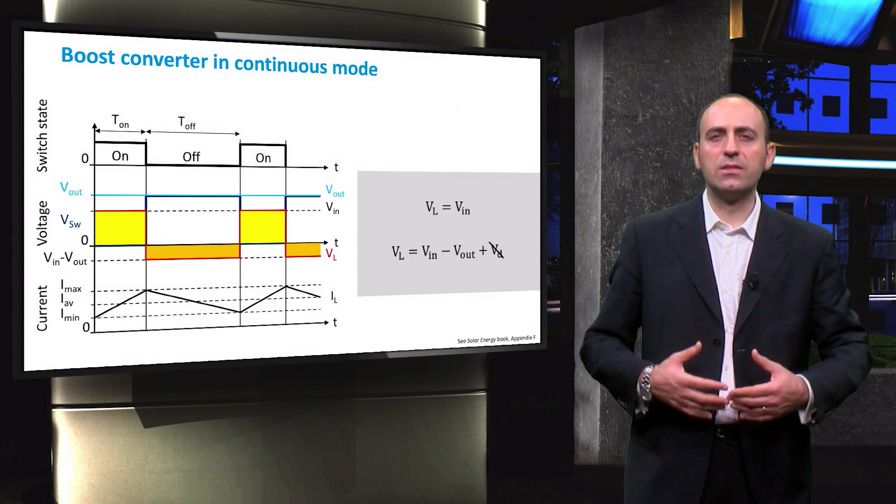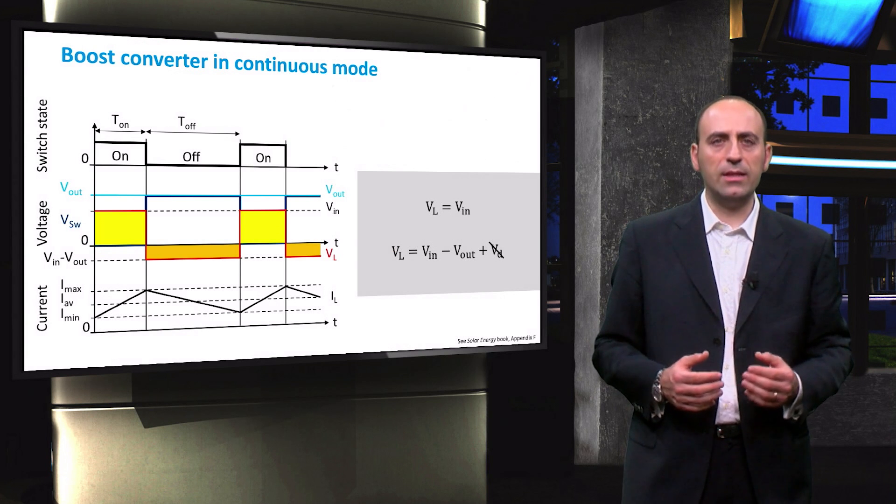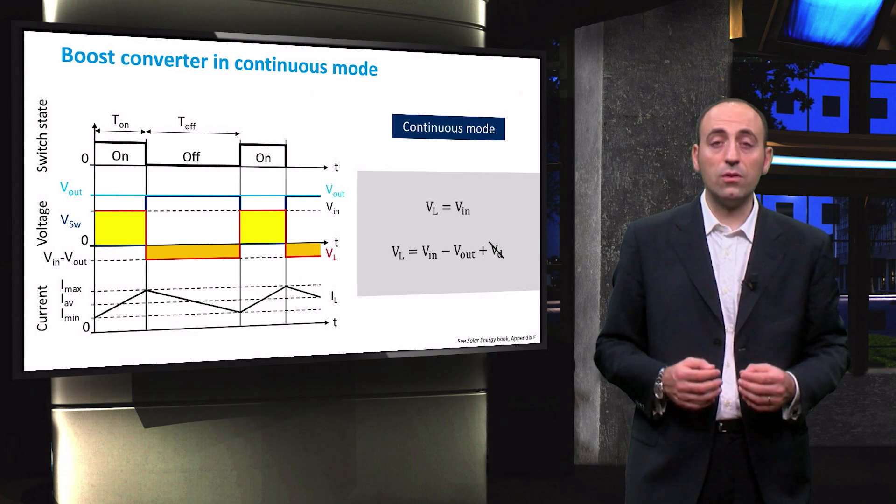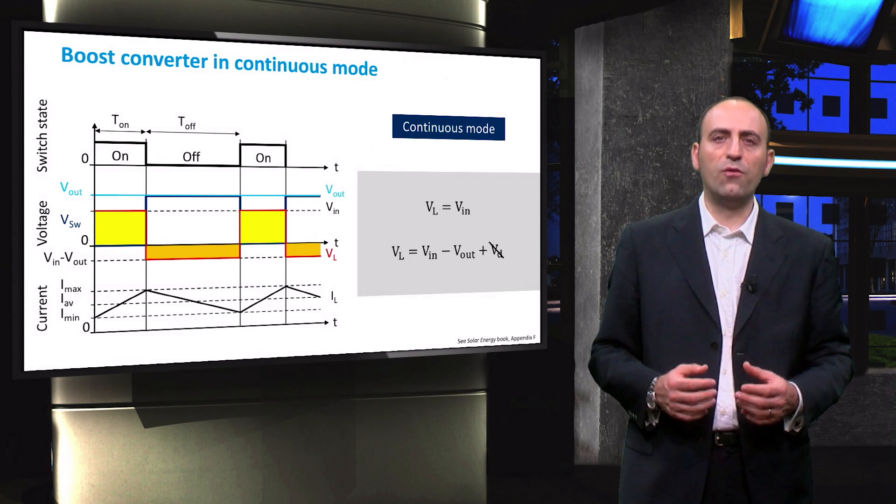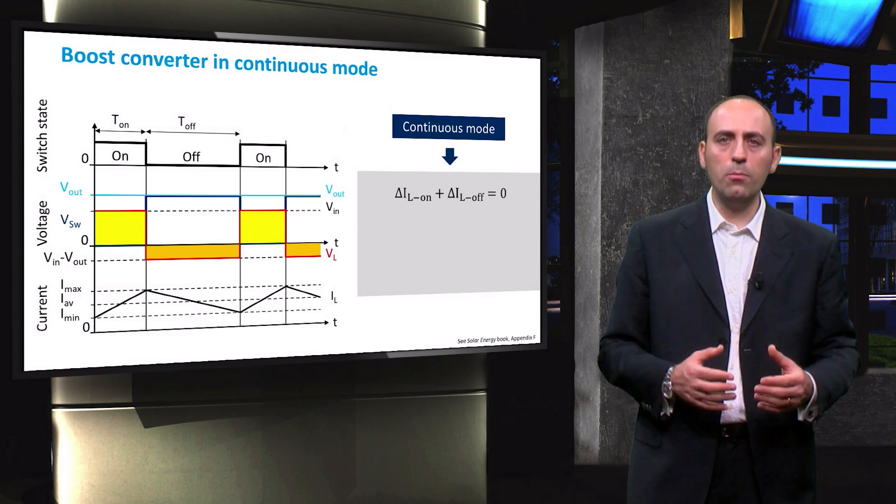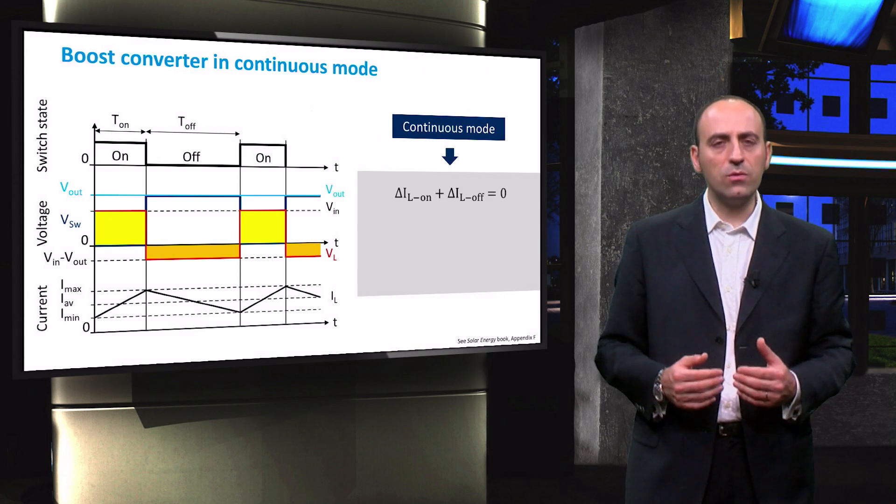After a certain amount of cycles, the boost converter reaches steady state operation. In this continuous mode, the net flow of current across the inductor is zero. Therefore, we can write the equation relating the current variation during ON and OFF modes, respectively the increase and decrease of current.